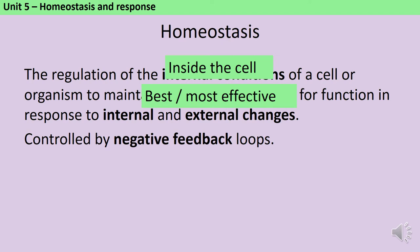Optimum means the best or most effective conditions — the conditions where the enzymes are going to be able to work at their absolute maximum rate — in response to internal and external changes, such as a change in temperature. This is done using something called a negative feedback loop.